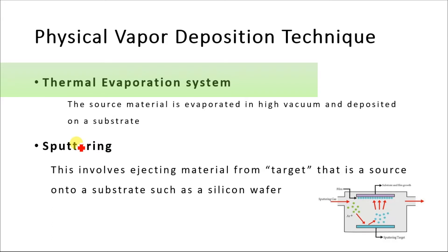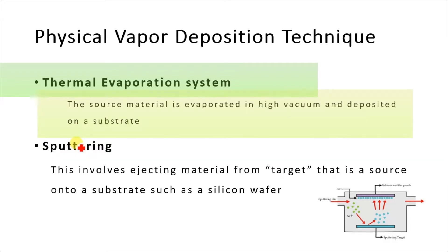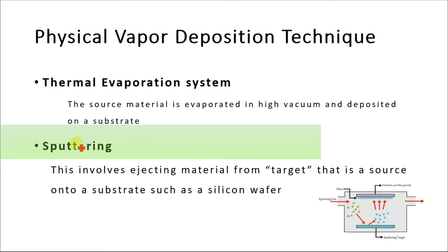Physical vapor deposition is subdivided into many types, but the two main types are thermal evaporation and sputtering. In the thermal evaporation system, the source material is evaporated in high vacuum and is deposited over a substrate, while sputtering involves ejecting material from a target onto a substrate.